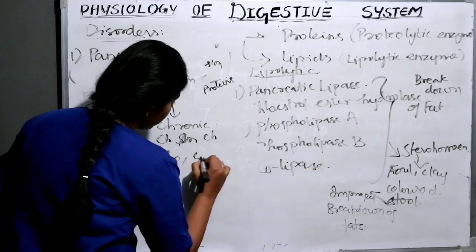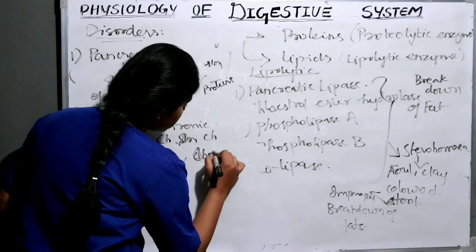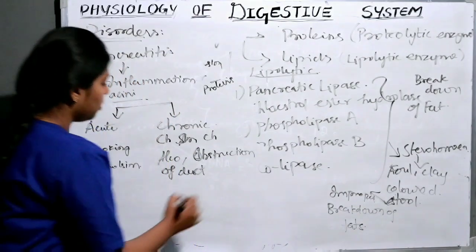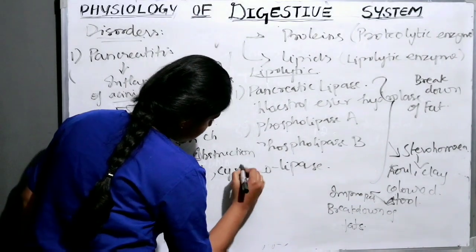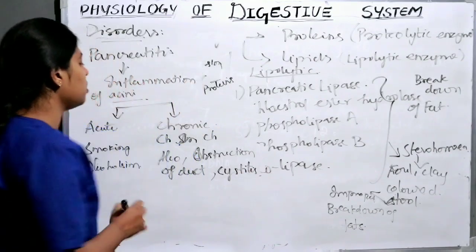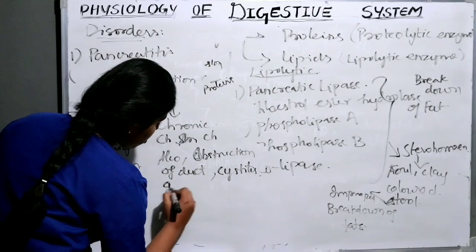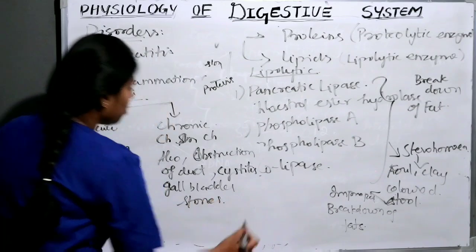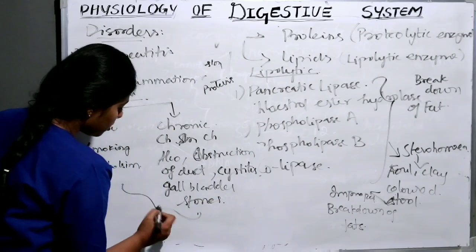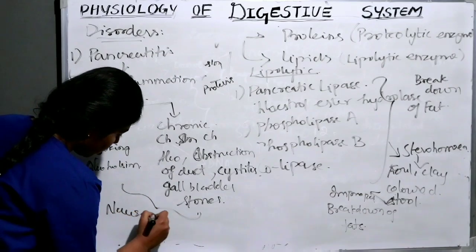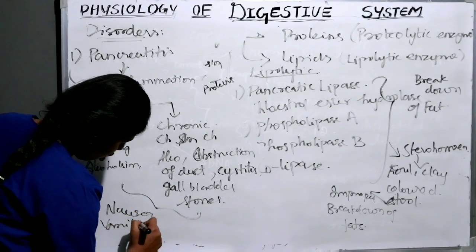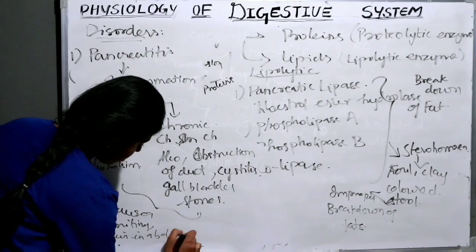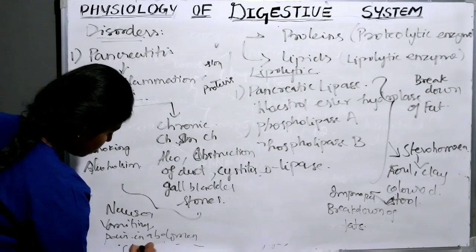Pancreatitis also occurs due to obstruction of the Wirsung duct, cystitis due to a cyst present in the pancreas, and gallbladder stones. The main symptoms include nausea, vomiting, pain in the abdomen, and steatorrhea.